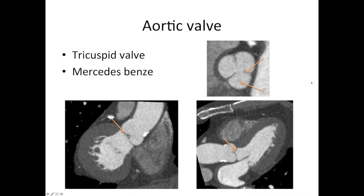The aortic valve has a few different components we should know the names of. We've got the aortic cusps — these flappy bits here — and then we've got the commissures, the darker lines that join between the two cusps. Cusps and commissures are important words to remember when describing the aortic valve.